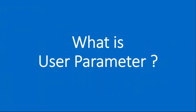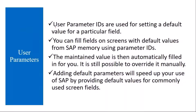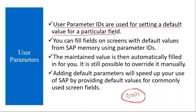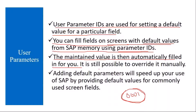First, let's understand what a user parameter is. User parameter IDs are used for setting a default value for a particular field. Suppose when you are executing transactions and for one field you want to automatically propose one value — for example, if you are working for plant 0001, when you are doing transactions, you want that plant to come by default in the plant field. You can fill fields on screens with default values from SAP memory using parameter IDs. The maintained value is then automatically filled in for you by the system.